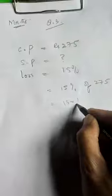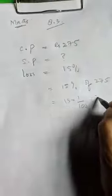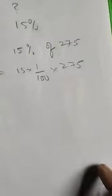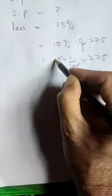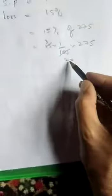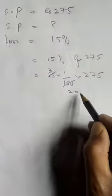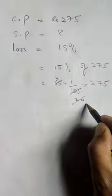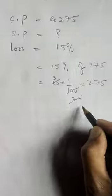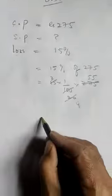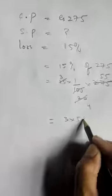Calculating 15% of 275: this is equal to 15% of the cost price, which is the loss of 15%.